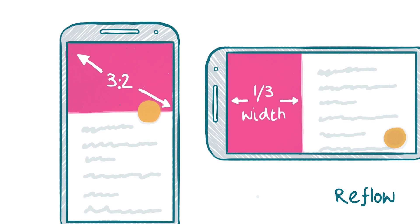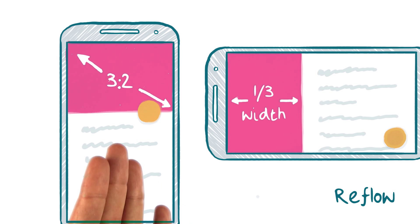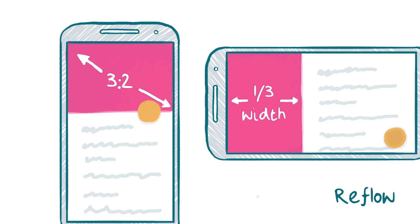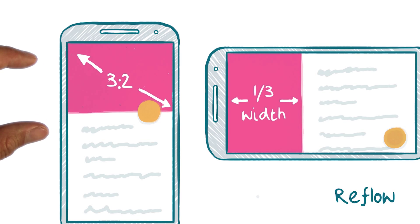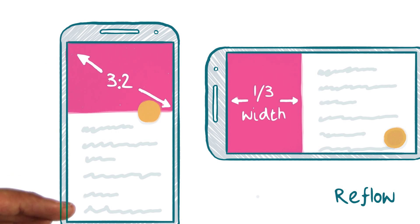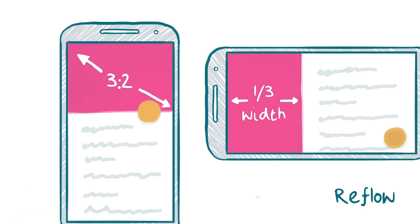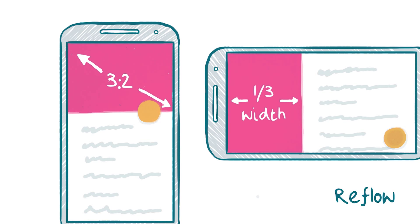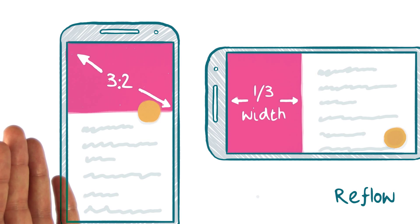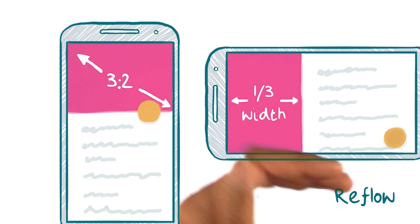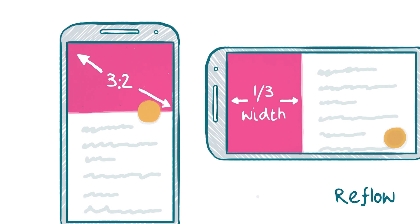We can also use this reflow technique in different orientations on the same device. In this example, a portrait layout places an image with a set aspect ratio above some text. Using the same layout in landscape would likely fill the entire screen with an image and push the text down below the fold. A better approach would be to reflow the content so that it's horizontally stacked instead of vertically, allowing you to see both the image and the text together.